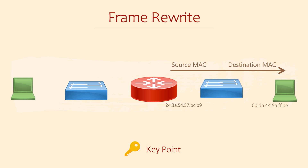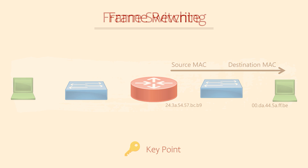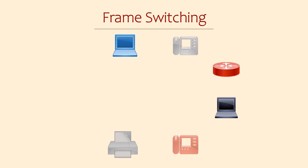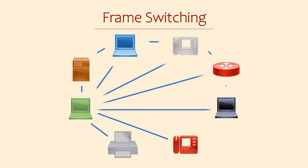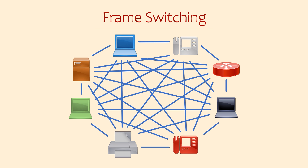Switches don't count as hops in this sense. That is, they don't update the source and destination MAC addresses of each frame that passes through them. So what are switches for? Connectivity. All devices need to be connected to each other in some way, but we can't literally connect every device to every other device — imagine how many cables we would need. Instead, the switch uses a process called frame switching.